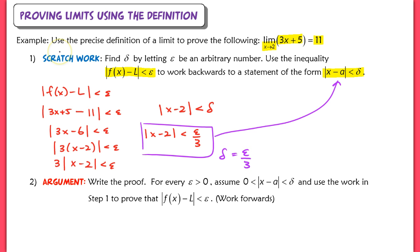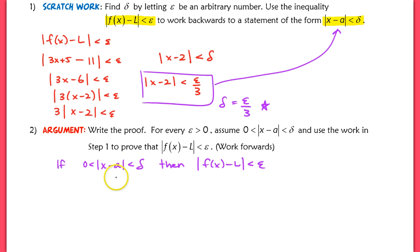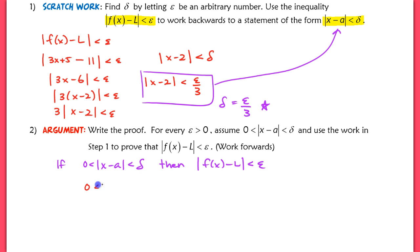The point of this scratch work — working backwards — was to find delta. Now that we've found it, we assume the distance between x and a is strictly between 0 and delta, and we'll work forwards to complete the proof. We want to show that if the distance between x and 2 is strictly between 0 and delta, which is epsilon over 3, then the distance between our function and the limit L is less than epsilon.